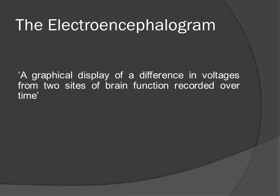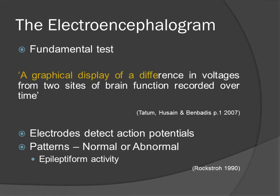The EEG is a fundamental test. It is a graphical display of a difference in voltages from two sites of brain function recorded over time. The brain's neurons produce electrical impulses called action potentials that can be detected using electrodes placed on the scalp of the patient. By identifying the location and type of electrical patterns, normal and abnormal brainwave patterns can be identified. The abnormal signals are known as epileptiform and are seen in people with epilepsy. The EEG gives conclusive evidence of abnormal epileptic signals.